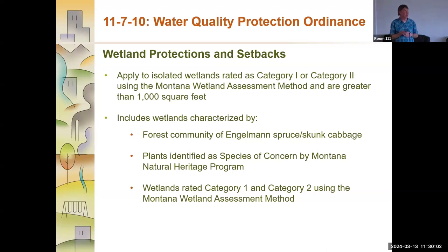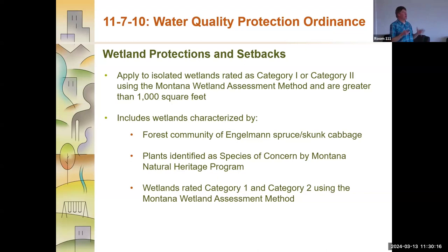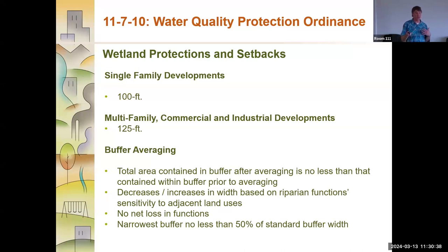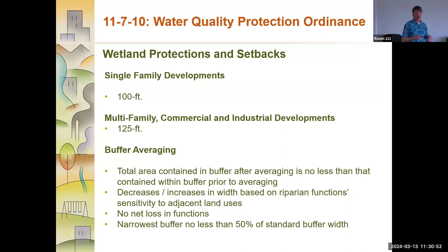We apply these regulations to Category 1 and Category 2 wetlands. We also have fairly unique wetland community types in our town — the forested community with Engelmann spruce and skunk cabbage, for example. We worked with DEQ and several consultants to craft this language to make it more specific to our planning. For wetland protections, we adopted 100-foot setbacks for single-family residences, 125 feet for multifamily, industrial, and commercial developments, but we also allow some buffer averaging — up to 50% of the buffer could be reduced as long as it's expanded into another location so that net functions are maintained.